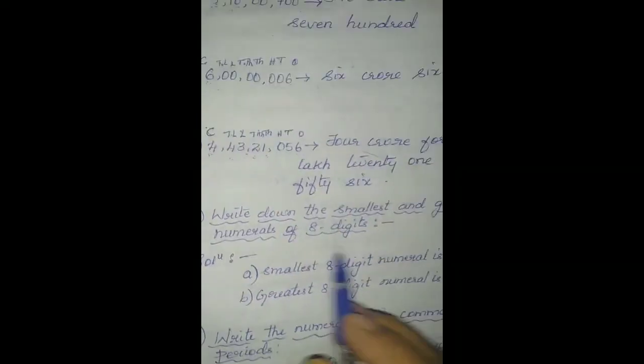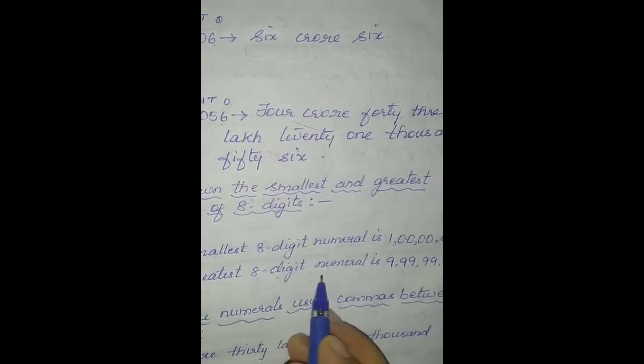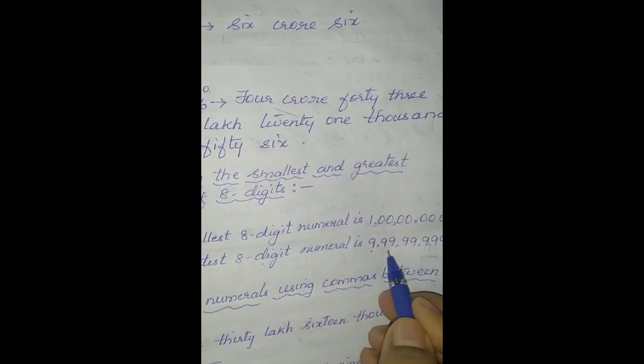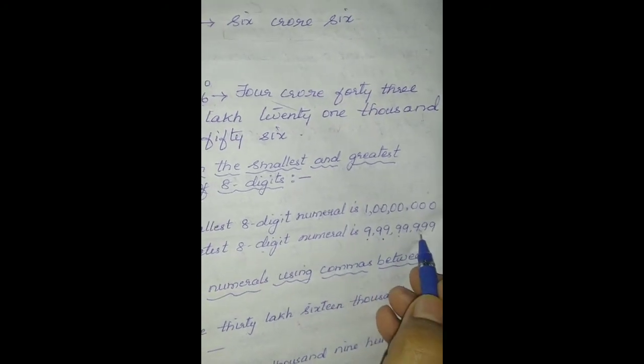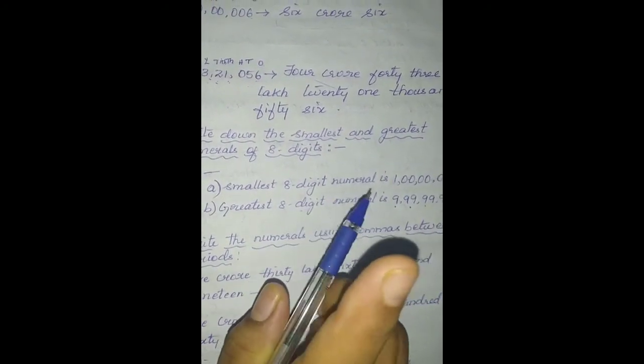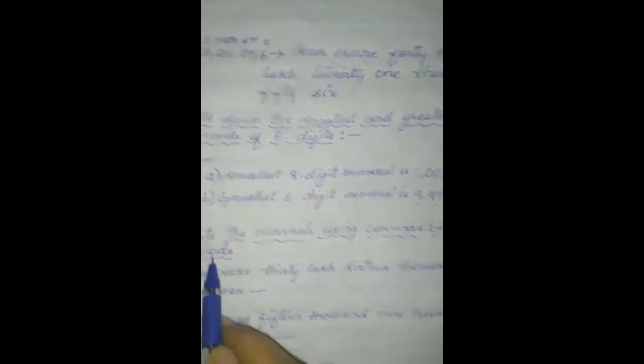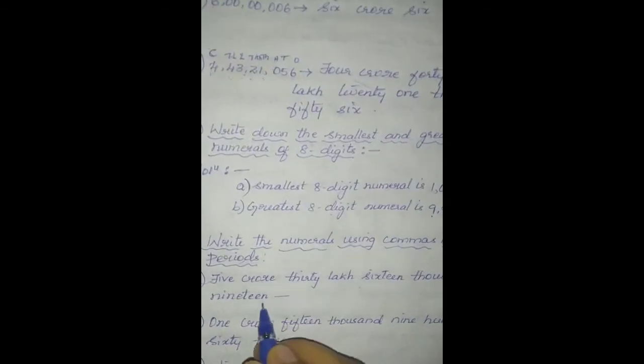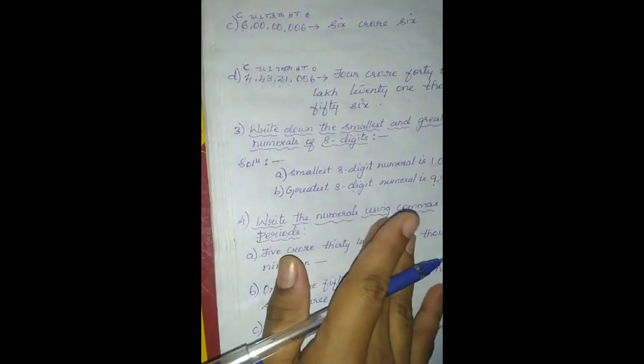Now let us solve: write down the smallest and greatest numerals of 8 digits. The smallest 8-digit number is 1 crore and the greatest 8-digit numeral is 9,99,99,999. Just as the smallest 1-digit number is 1 and the greatest 1-digit number is 9. Now write the numerals using commas between the periods. The crore number is divided into 4 periods: 1s period, 1000s period, lakhs period, and crores period.